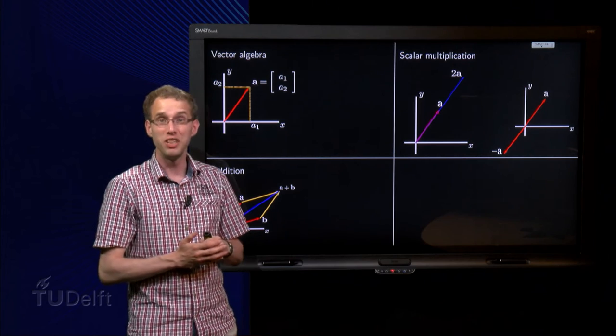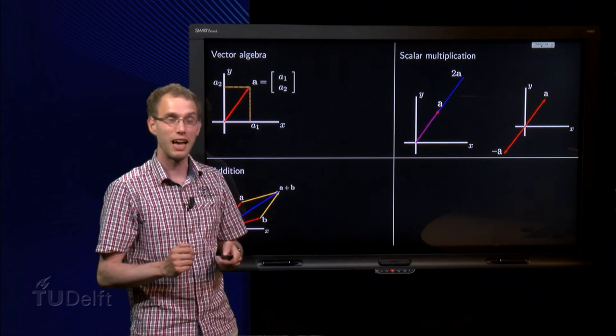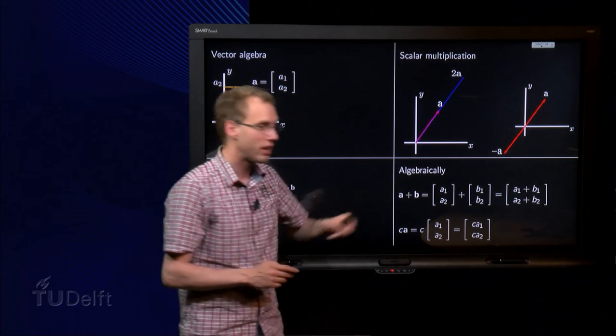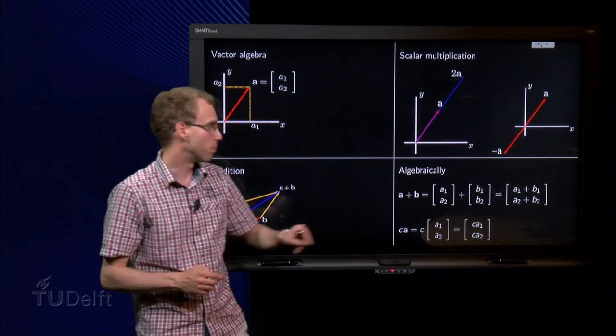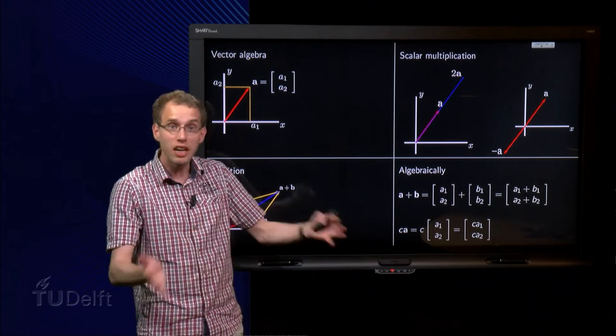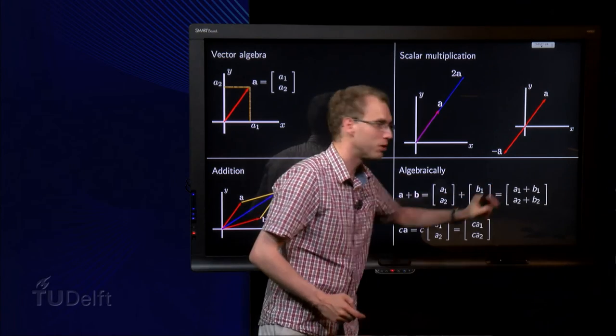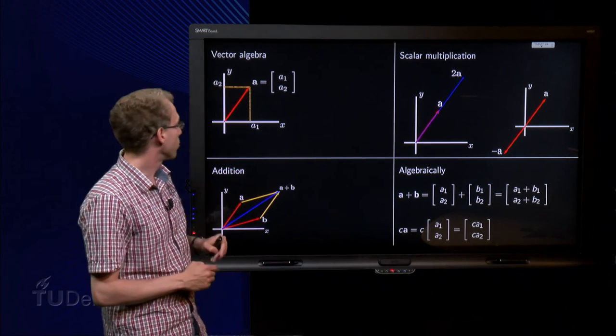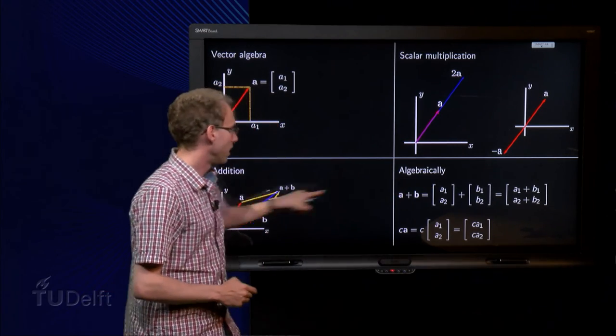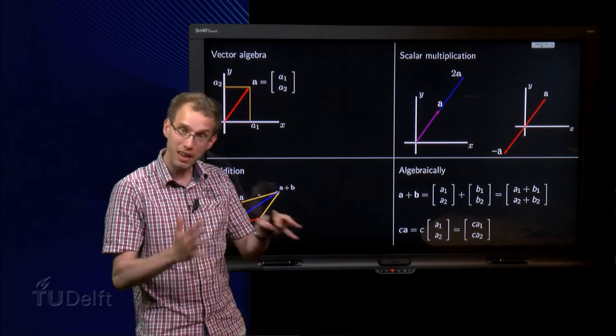That is from a geometric viewpoint. But how do you do it algebraically? A plus B. Well if you write down A in terms of its components, and B in terms of its components, you just have to add the components A1 plus B1, A2 plus B2. And that corresponds exactly to this construction over here. So those definitions of addition, in fact, are the same.